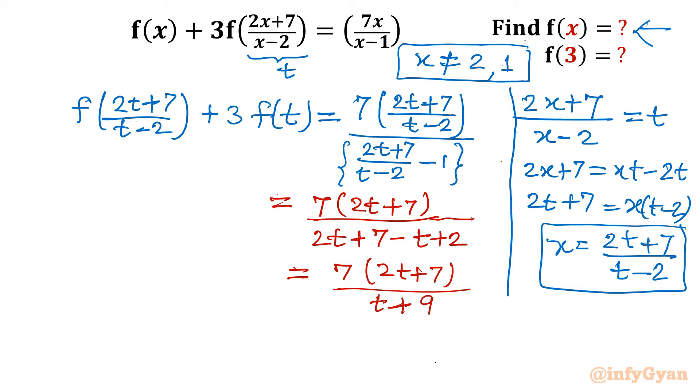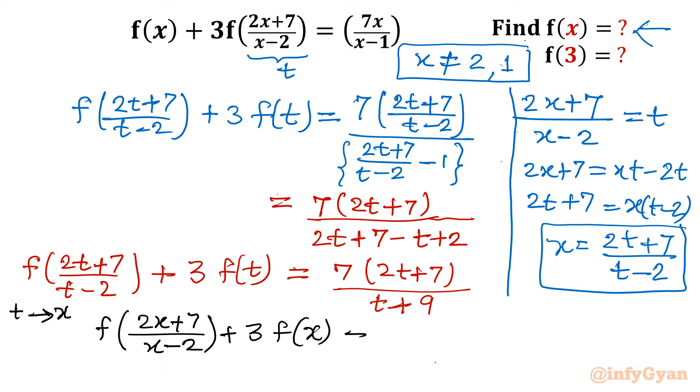I can write this as 7 times (2t+7), denominator t-2, I will cancel with the denominator's denominator. So 2t + 7 - t + 2. After simplification, this value is 7(2t+7)/(t+9). Simplification is clear. Now on the left hand side, f((2t+7)/(t-2)) + 3f(t). Now I will give replacement of variable. I will replace t with x.